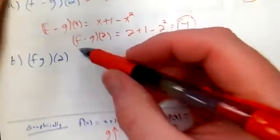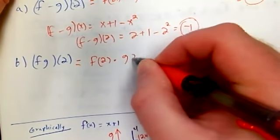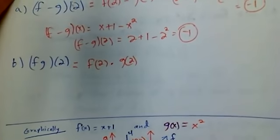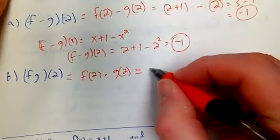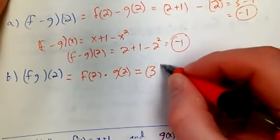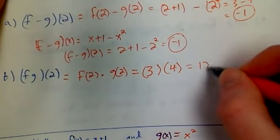How about if I look at f times g of 2? Well, f times g of 2 is going to be f(2) times g(2). f(2) times g(2) is going to be 3 times 4, which will then be 12.